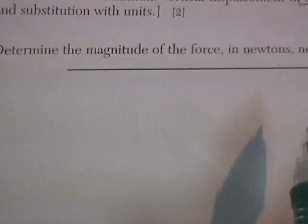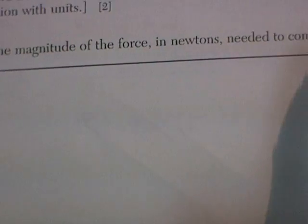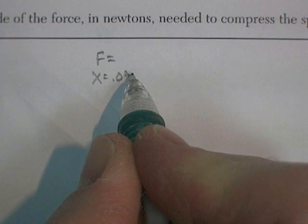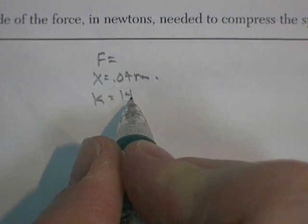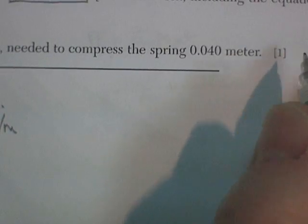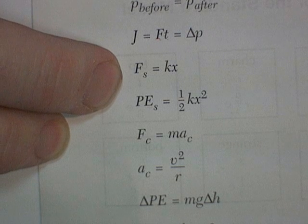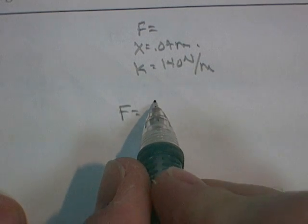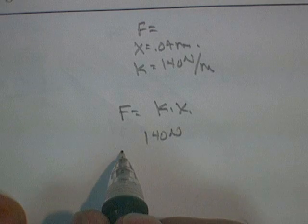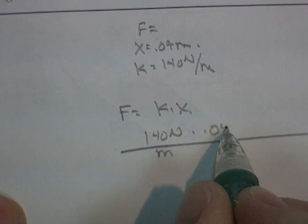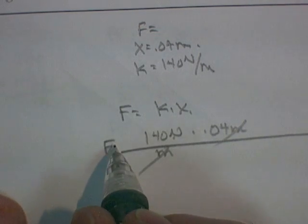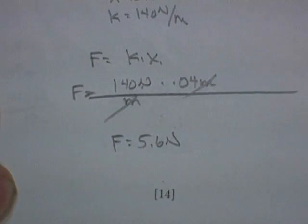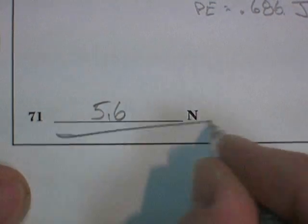And question 71, determine the magnitude of the force in newtons needed to compress the spring 0.04 meters. So how much force is needed to move at a distance of 0.04 meters? The spring constant was 140 newtons per meter. It's only worth a point, so they only want an answer. Well, the formula says the force in a spring is equal to k times x. So f is equal to k times x, 140 newtons per meter, times 0.04 meters. Meters cancel out. I'm left with newtons, which is a good unit of force to work with. And my calculator says the answer is 5.6 newtons. 5.6 newtons. I'm done.